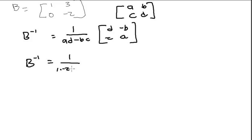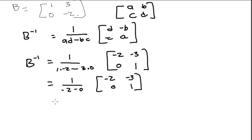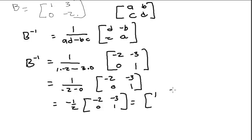So the inverse of matrix B is 1 over (1 times -2 minus 3 times 0) times the matrix where I swap these two — putting -2 and 1 — and change the signs of the others, so -3 and 0. That's 1 over -2 times [-2, -3, 0, 1], or negative one-half times [-2, -3, 0, 1], which gives [1, 3/2, 0, -1/2].